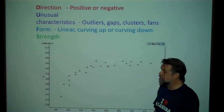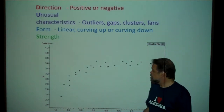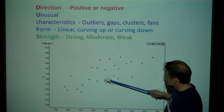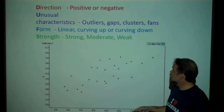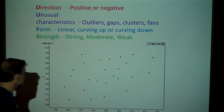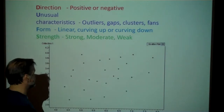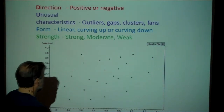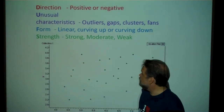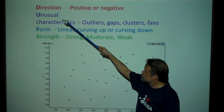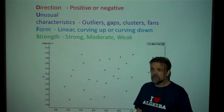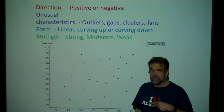Finally, we want to talk about strength — how strong is the association? Is it a really strong association where you can tell the pattern very easily? Is it more dispersed — a moderate association? Or do you have a really weak association where you look at it and say, I don't know what's going on here, maybe a tiny bit of movement going up, but I can't really tell. So that's what you want to look at when describing bivariate data: direction, unusual characteristics, form, and strength.